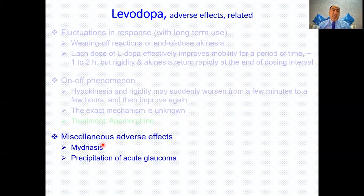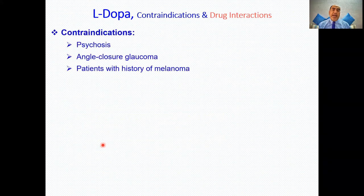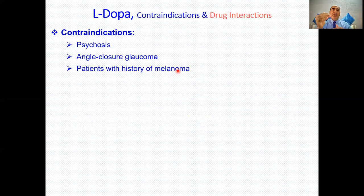Miscellaneous adverse effects include mydriasis and precipitation of acute glaucoma — sympathomimetics generally aggravate glaucoma. Contraindications include glaucoma and psychosis, because levodopa increases dopamine levels. Patients with a history of melanoma are also contraindicated, because melanin synthesis starts from the same pathway: tyrosine → dopa → dopaquinone → eumelanin. Giving levodopa enhances the melanogenesis pathway and can aggravate melanoma.